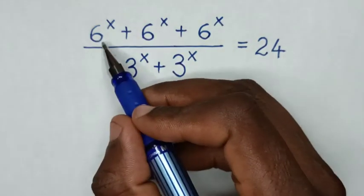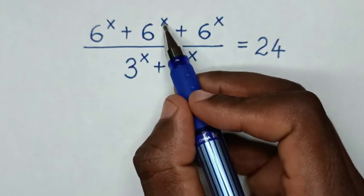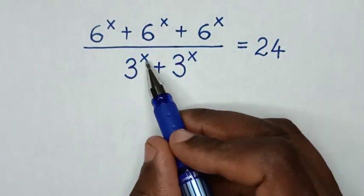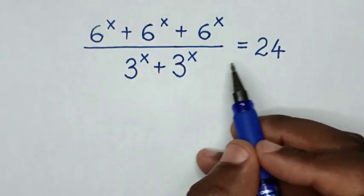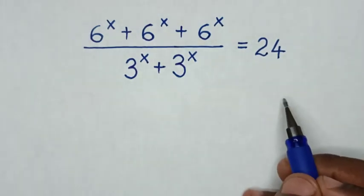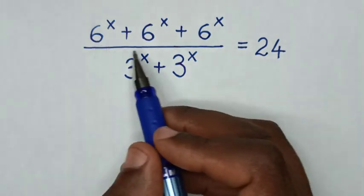Hello! How to solve (6^x + 6^x + 6^x) / (3^x + 3^x) = 24. To find the value of x from this equation. So from the numerator, 6 power x is equal to 24.